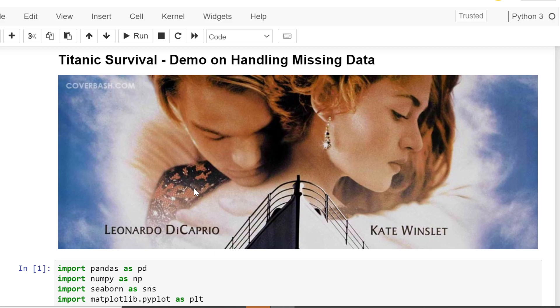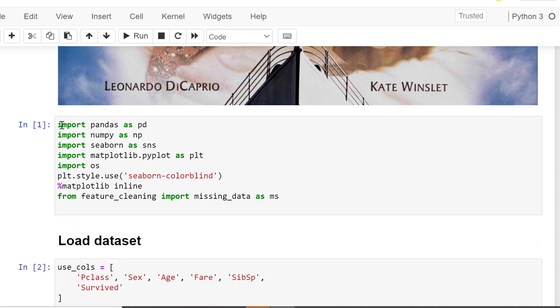That is feature engineering we need to do, right? First let's import the required libraries. I'm importing pandas, numpy, seaborn, matplotlib, and we've also created a different Python class called missing_data. We're importing it as ms. We'll be using ms further to use some functions from this class.